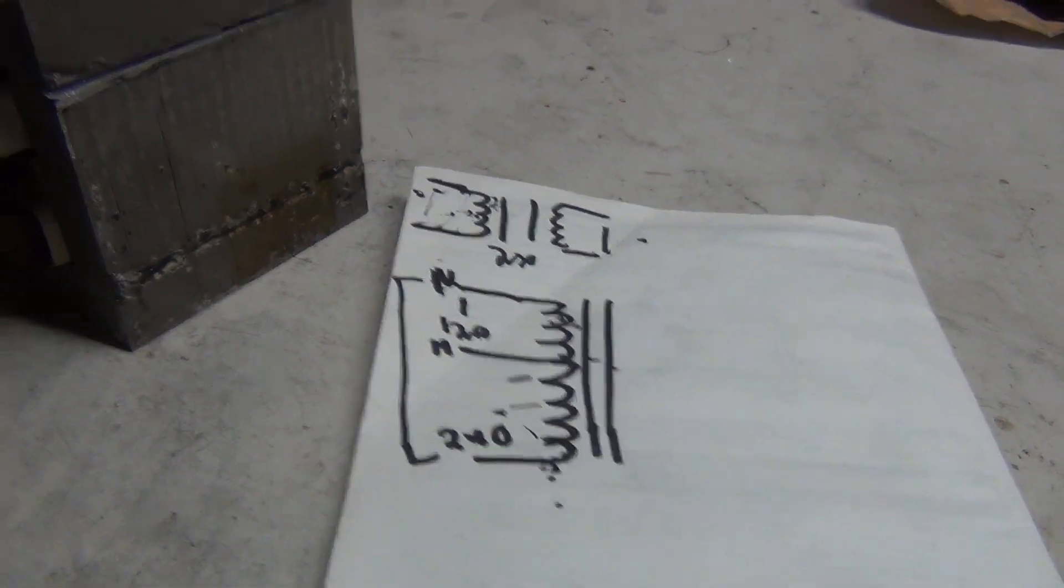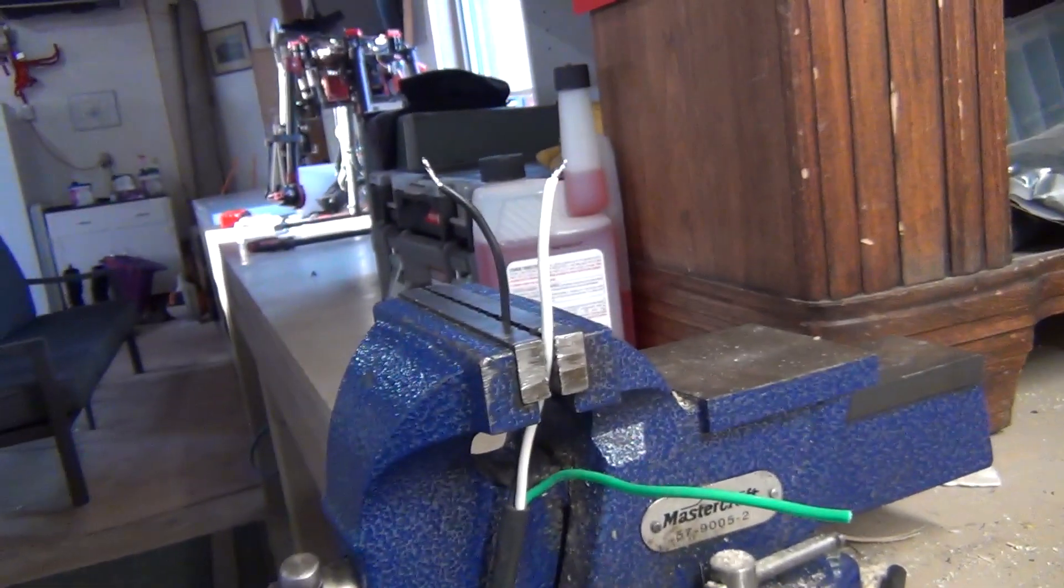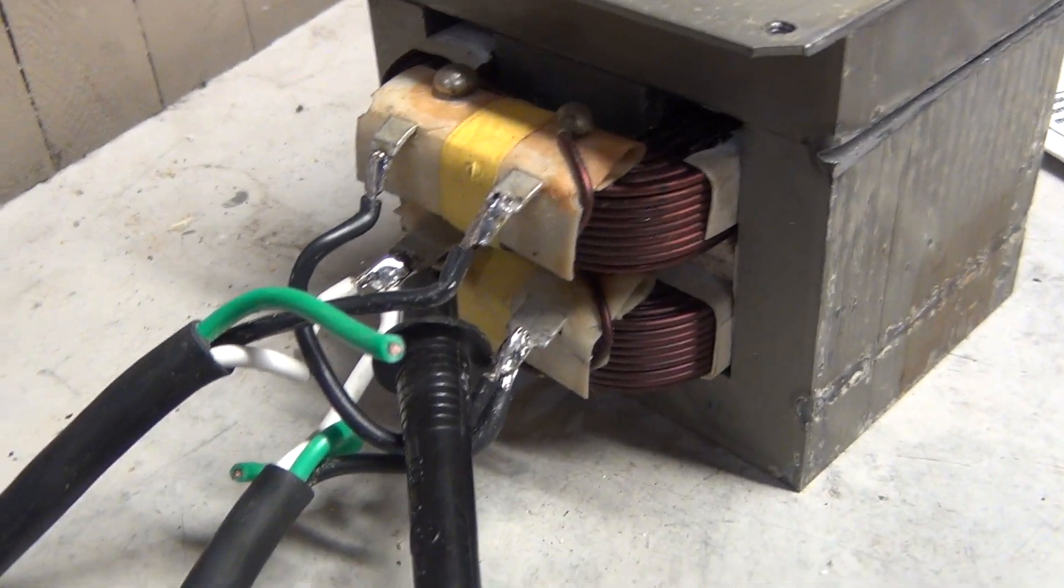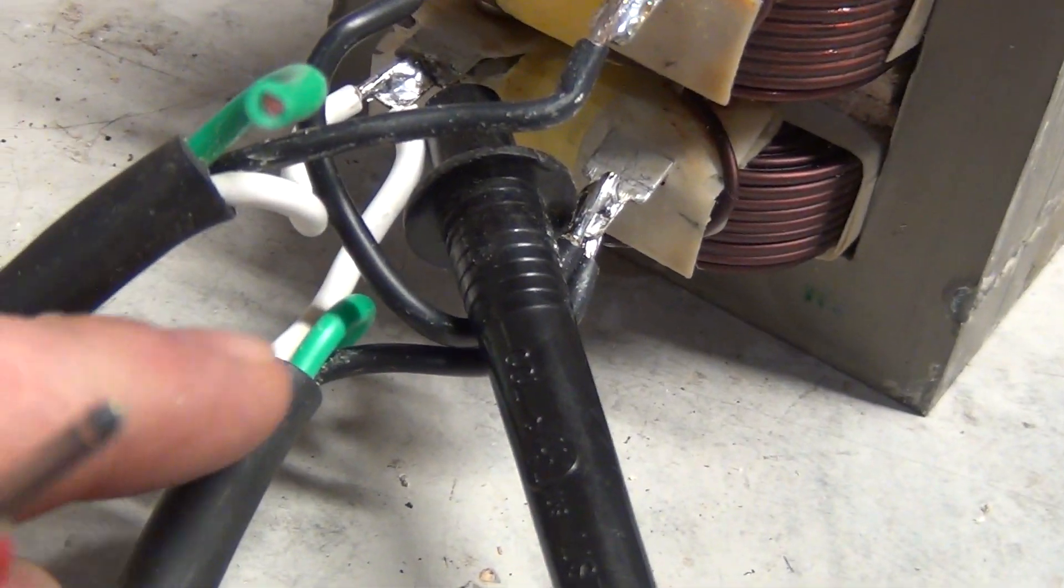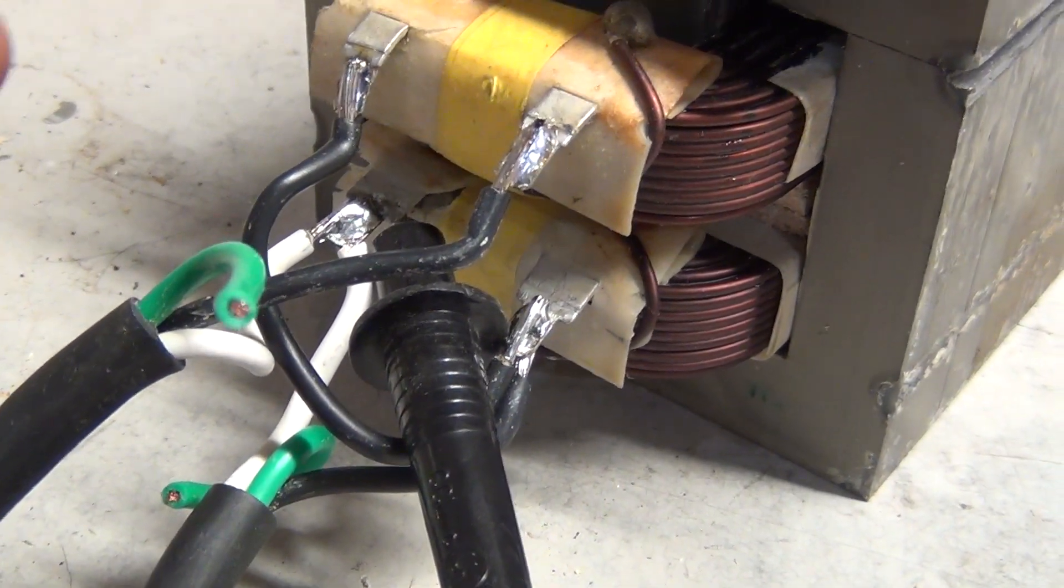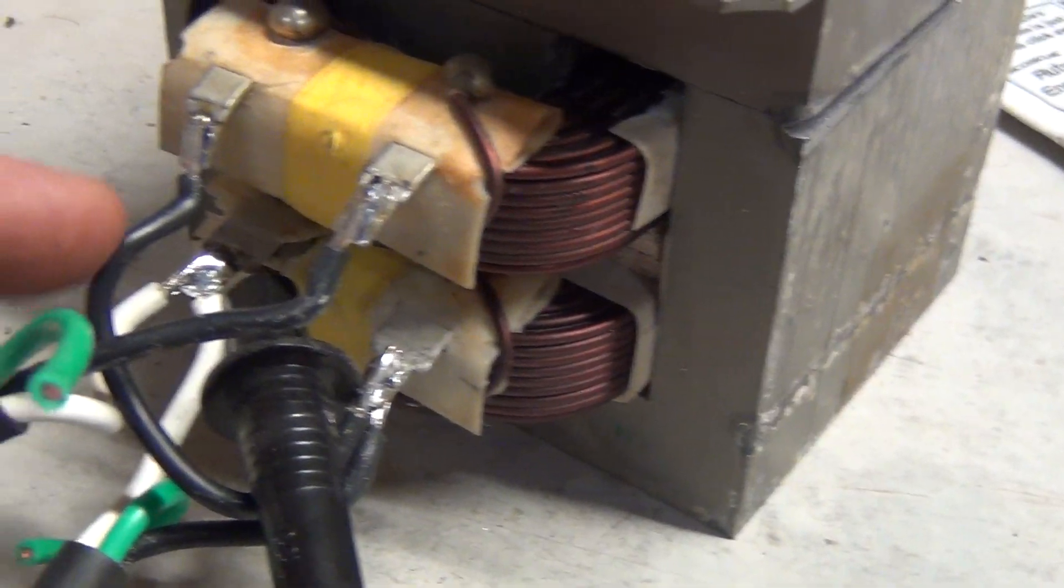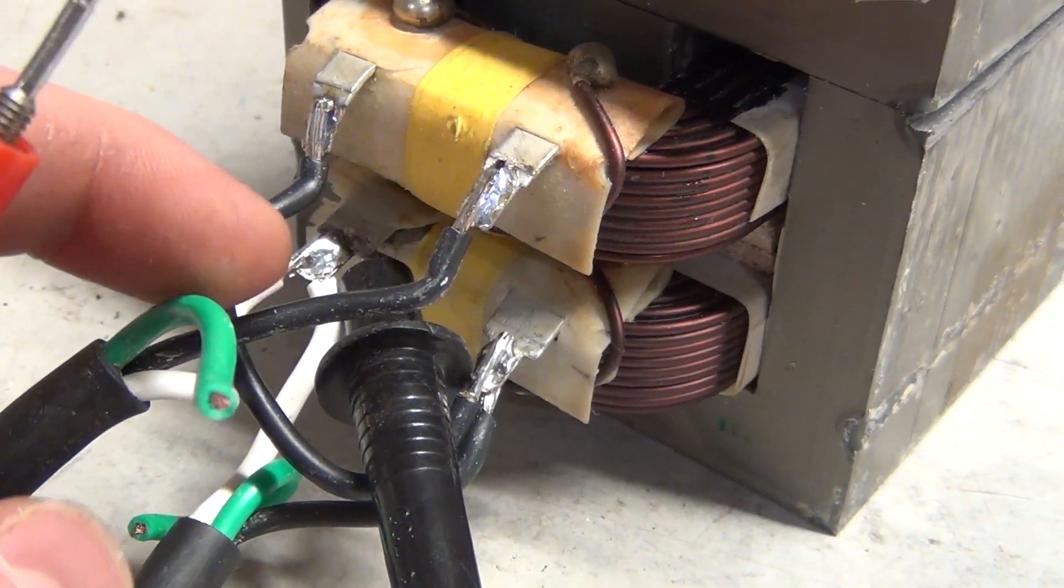So I will show you now the transformer action here working and we'll test those output leads. I've got the probes across these leads here. The wiring might look a bit messy, but on this bottom one you got your white neutral, black is hot. Then going from that hot I have branched across here to the top coil, and then the other end of the top coil goes to the hot there, and this just goes back to neutral.